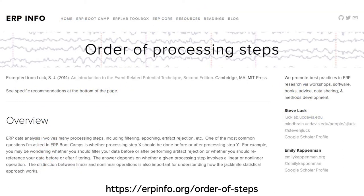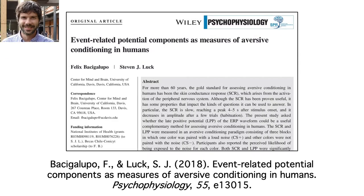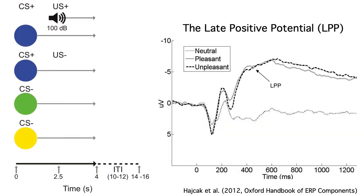Different studies do these steps in different orders. If you want to know more about the order of steps, take a look at this webpage. I'll keep using Felix's aversive conditioning study as an example. To keep things simple, I'll focus on the late positive potential. He also looked at the skin conductance response and a long duration ERP component called the stimulus preceding negativity, but I'll skip those.